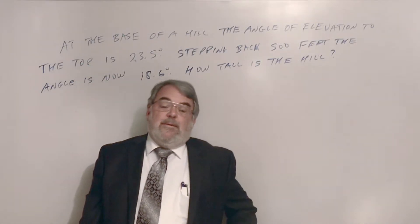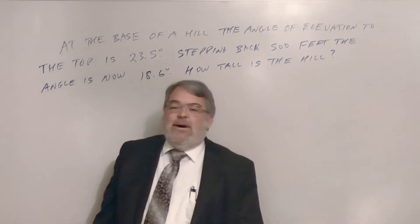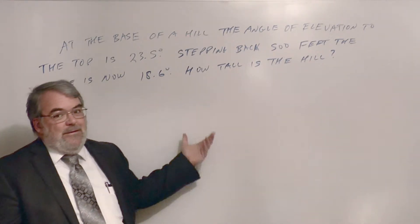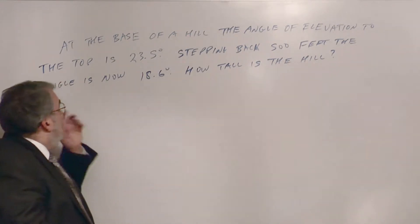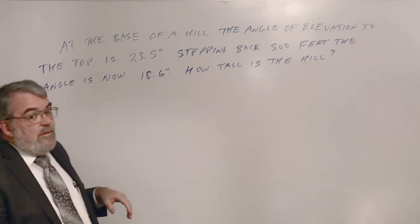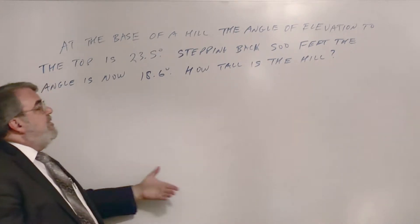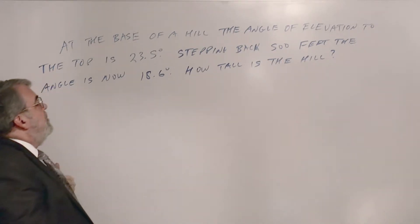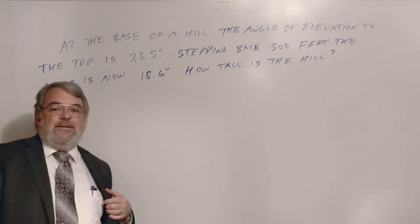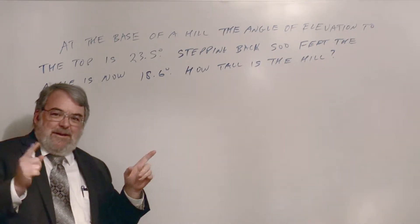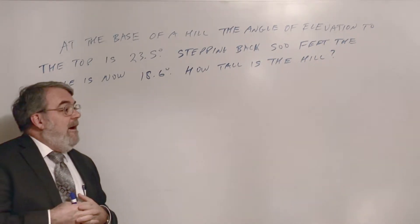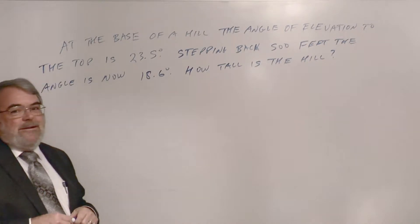I thought this would make a neat problem — I just made up the numbers. At the base of a hill, the angle of elevation to the top is 23.5 degrees. Stepping back 500 feet, the angle is now 18.6 degrees. How tall is the hill? Pause the video, draw the picture, see if you can draw it correctly, and then try it.